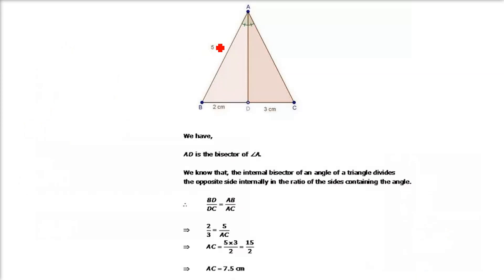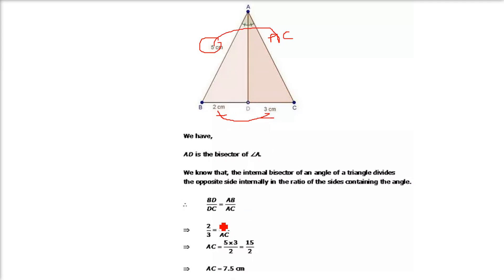In the next sub-part, AB is 5 and AC is not known. BD is 2 and DC is 3. So 5 by AC equals 2 by 3. That is, BD by DC equals AB by AC, giving AC equals 5 × 3 ÷ 2 which equals 7.5.